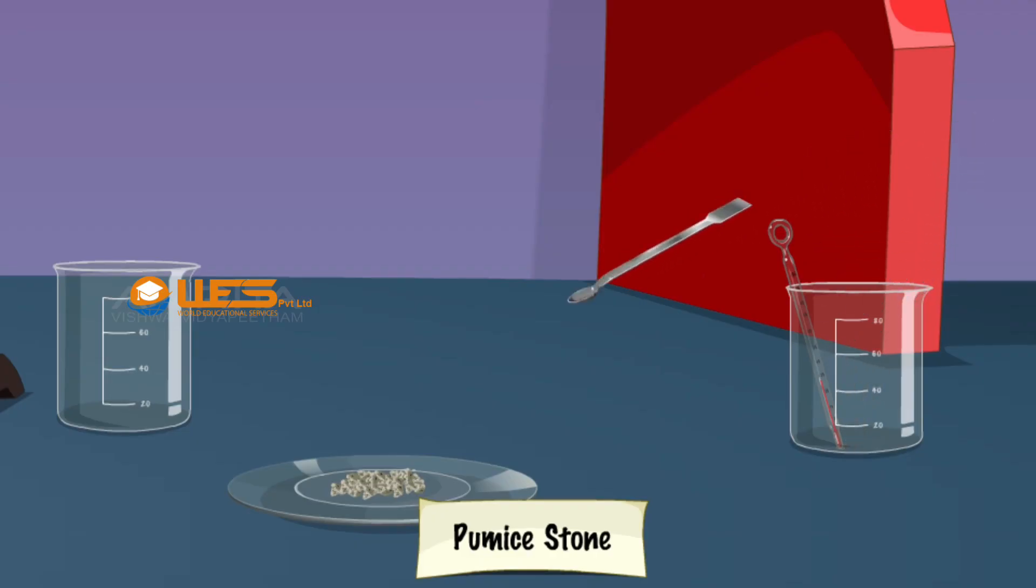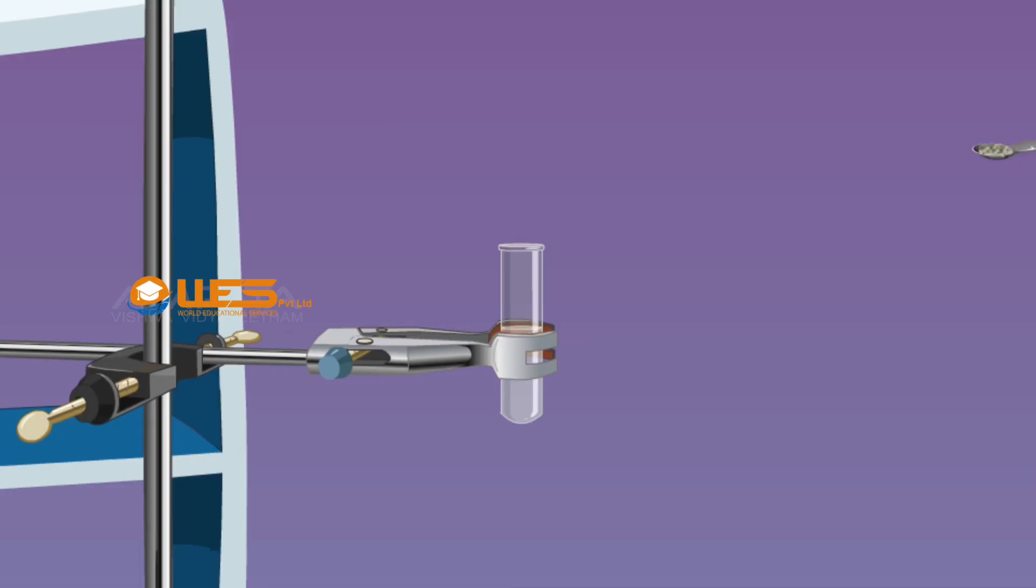Take a few pumice stones using a spatula. Put them into the boiling tube containing distilled water to avoid bumping while boiling.